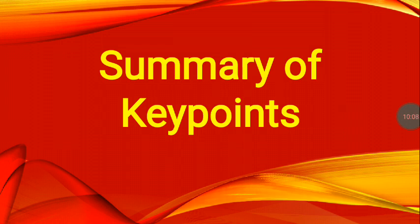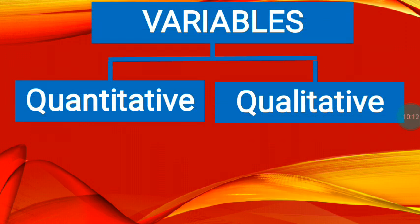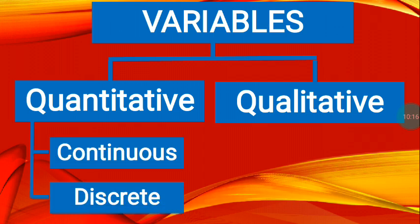Now, let us proceed to the summary of key points. Variables are divided into quantitative and qualitative data or variables. We're talking about variables. Under quantitative, you have continuous and discrete.